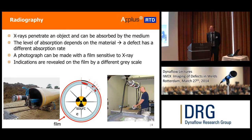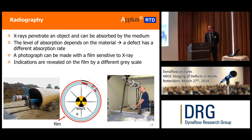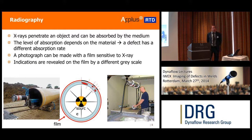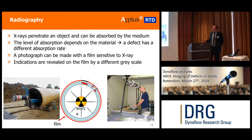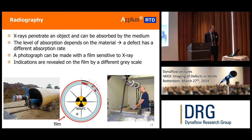The first one is radiography — this method has existed for quite some time. It's based on X-ray. X-rays are able to propagate through material, and depending on the material, it has different absorption properties. That's how you can find defects, because a defect is a different medium and thereby has different absorption properties.